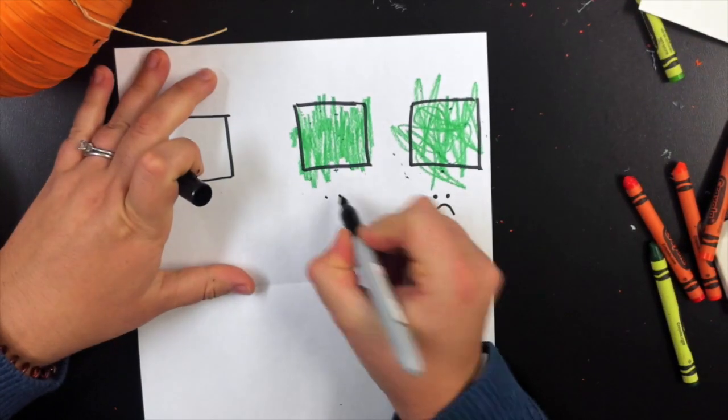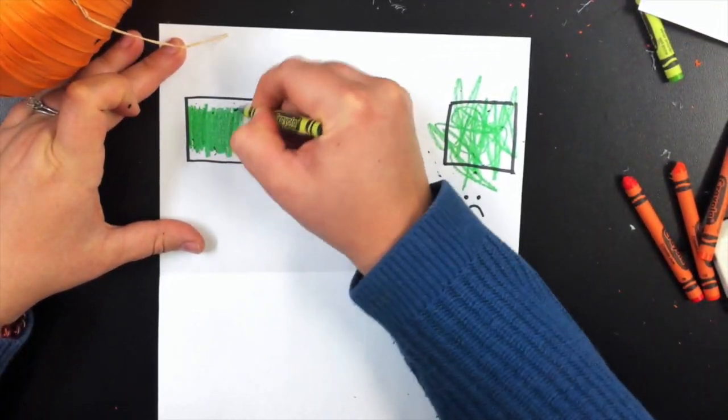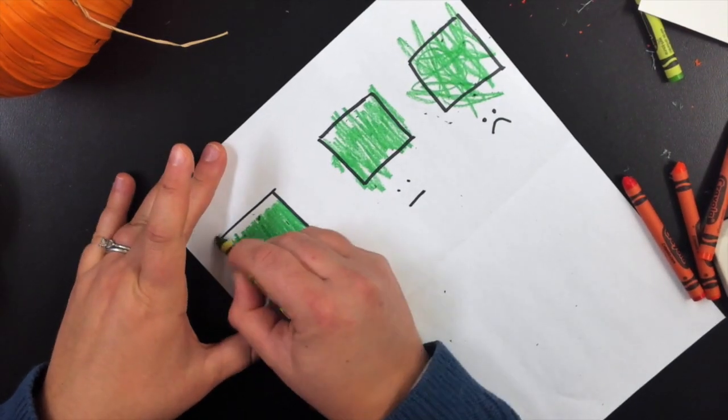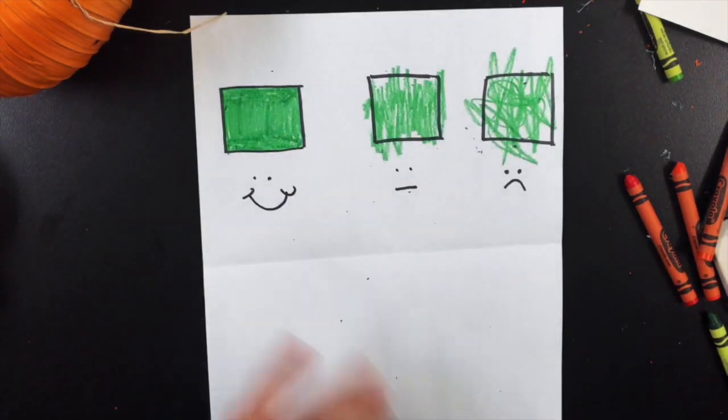If you see the first one, the frowny face, that person just scribbled, and then the middle one, they didn't stay inside the lines. I want you to do it nice and neat and fill up as many white spaces as you can, and that makes me happy.